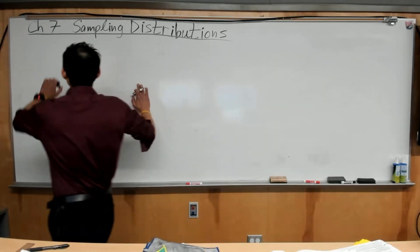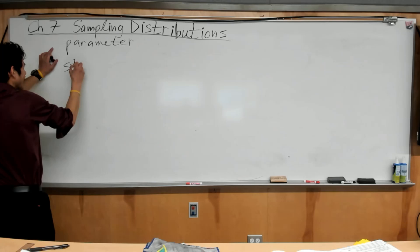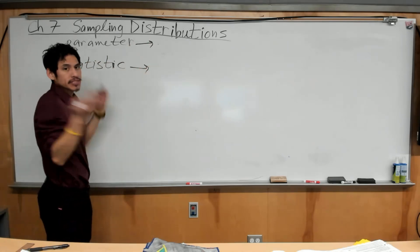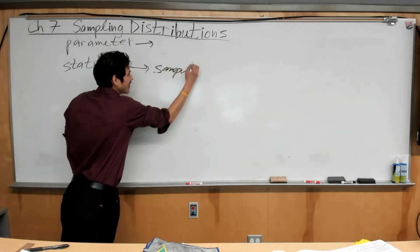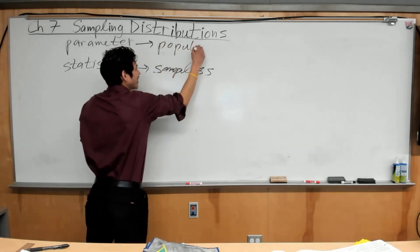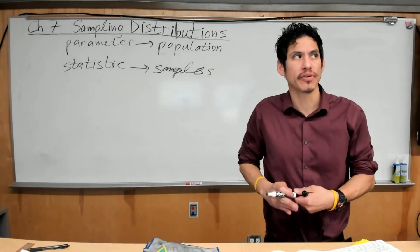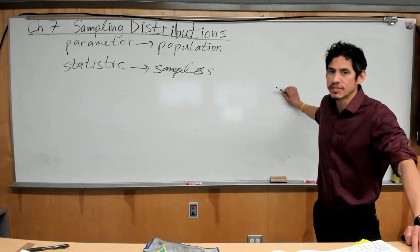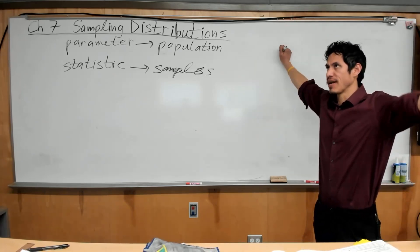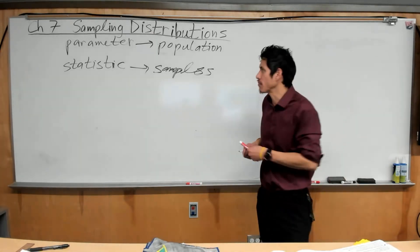Know what a parameter is and know what a statistic is. Parameter versus statistic. Statistics refer to samples, and parameters, we're talking about the population. Remember, the population is the entire group that you want to study. For example, maybe you want to figure out what percent of high school students in the U.S. smoke or try weed before graduating. You're not going to be able to survey every single high school student in the U.S. because that will take forever. It's not realistic. So you would take a sample of some of them.